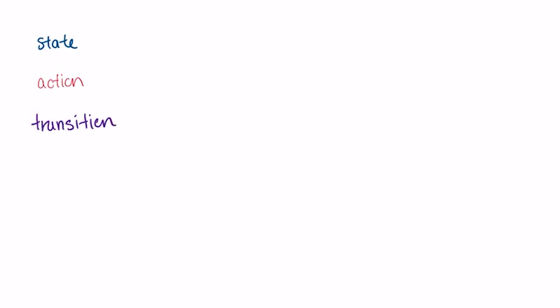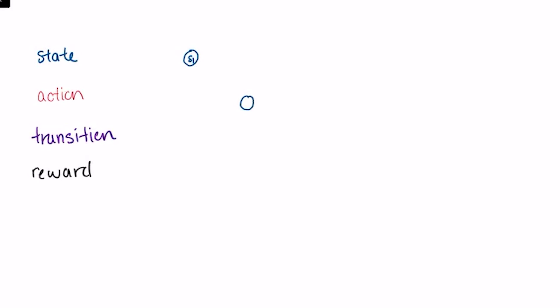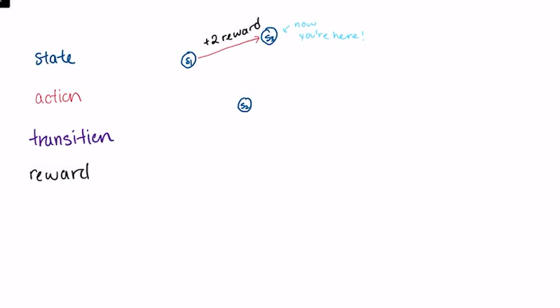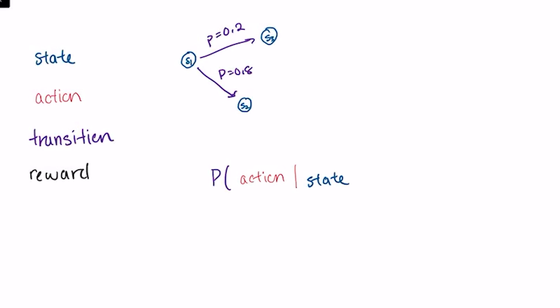Next up is policy optimization. To talk about policy optimization, we have to discuss Markov decision processes first. These have four parts: a set of states, a set of actions, a transition function, and a reward function. At any given time, the algorithm is in some state and must choose an action. The probability of choosing any particular action given its state is defined by the transition function. Once an action is chosen, the algorithm moves to a new state and the reward function is updated. The policy is the transition function mapped across the probability of taking any particular action at a given state.